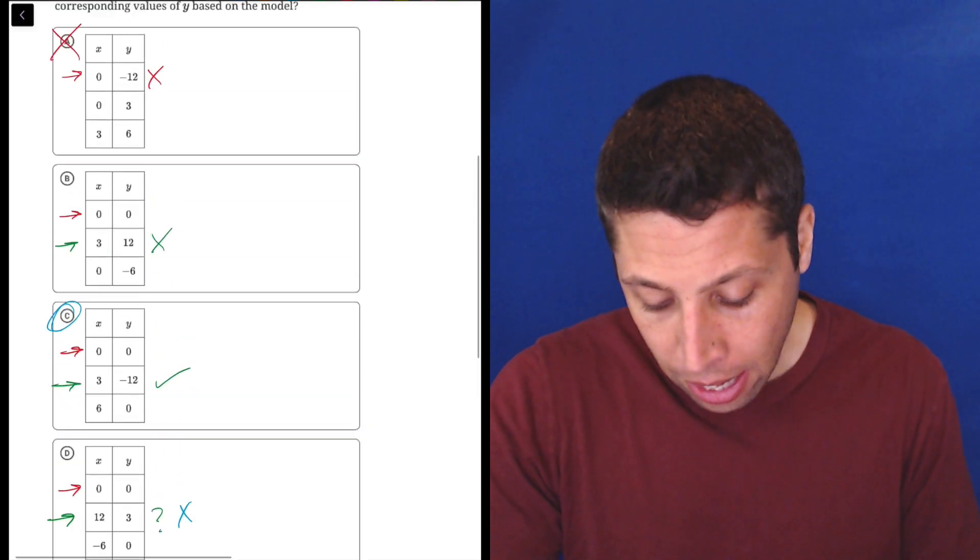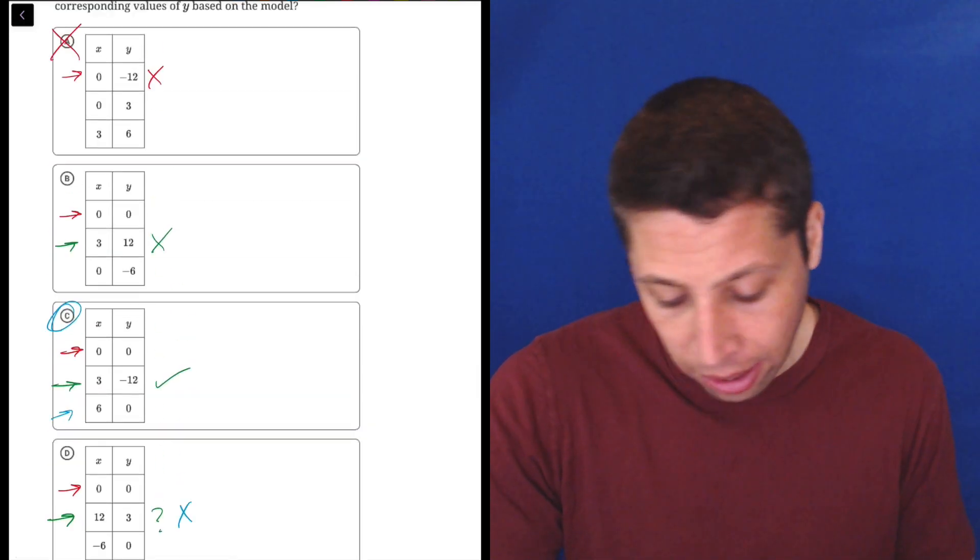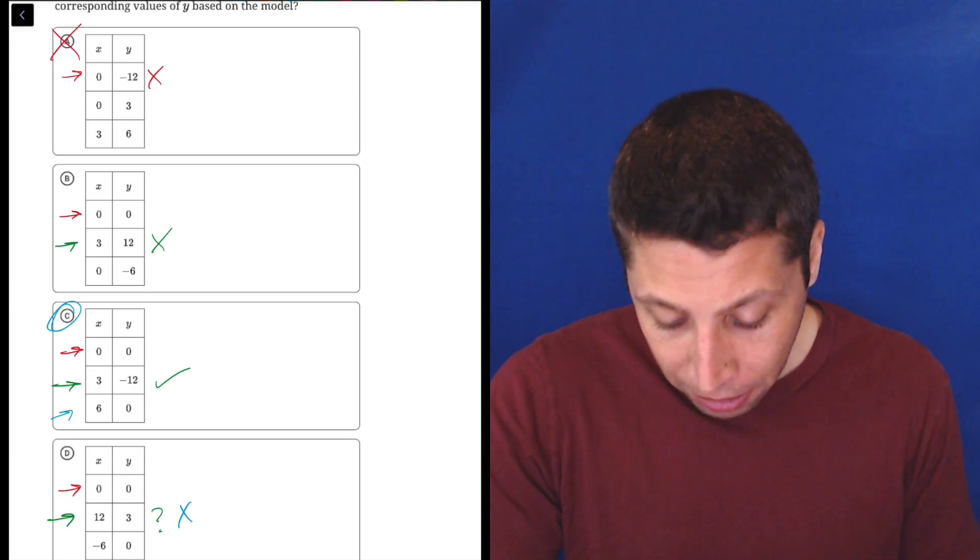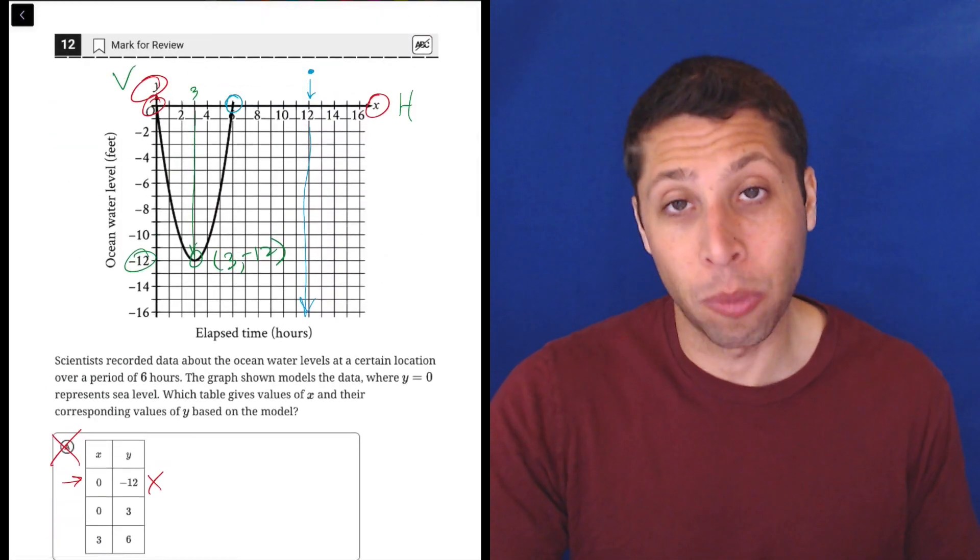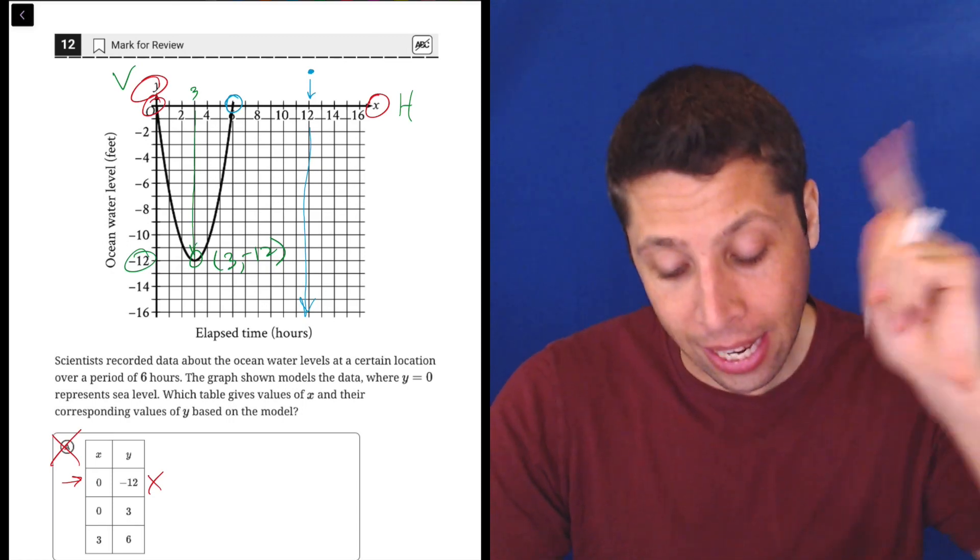Hopefully you don't make that mistake and we could verify choice C the last part, if we wanted to. We don't need to, but yeah, six, zero, is that a point? Yes. Right there. Six, zero, because we can see that the parabola comes back up and hits at that spot.